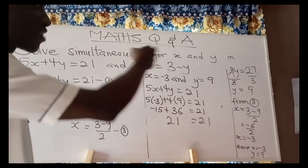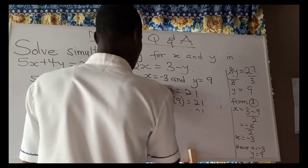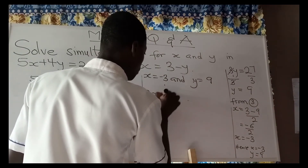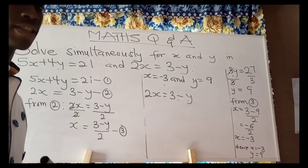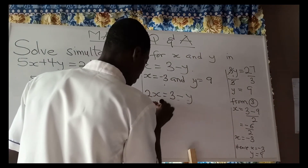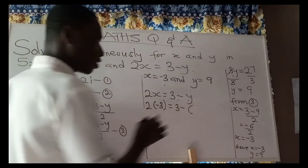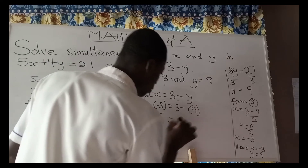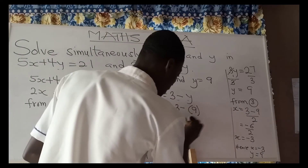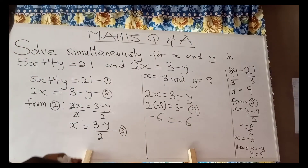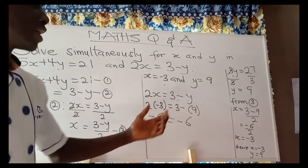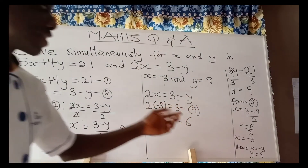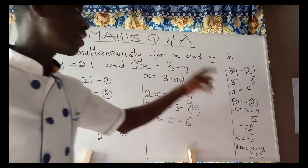Let's also try the second equation: 2x equal to 3 minus y. Wherever we see x, we write negative 3, and y is 9. So 2 times negative 3 equals 3 minus 9. The left hand side gives negative 6, and the right hand side gives negative 6. The left hand side and the right hand side are equal, confirming that x equals negative 3 and y equals 9 is correct.